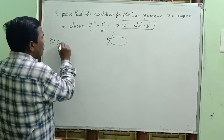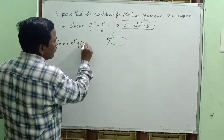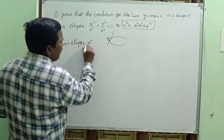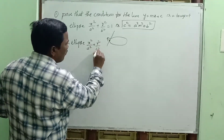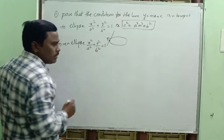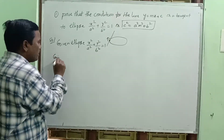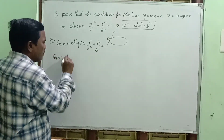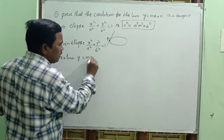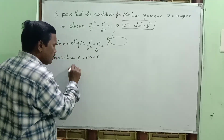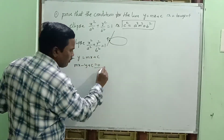Given ellipse: x square by a square plus y square by b square equal to 1 — standard form of the ellipse. Given line: y equal to mx plus c, which can be written as mx minus y plus c equal to 0.